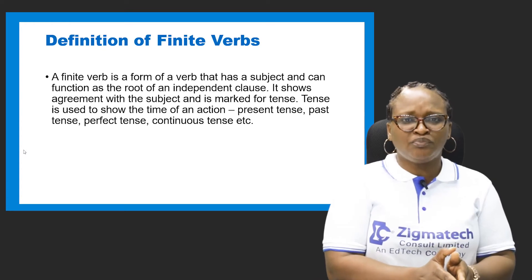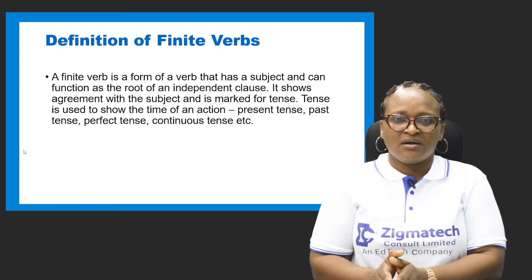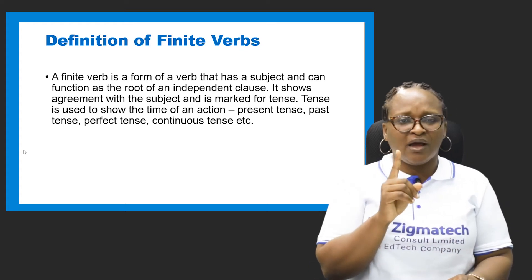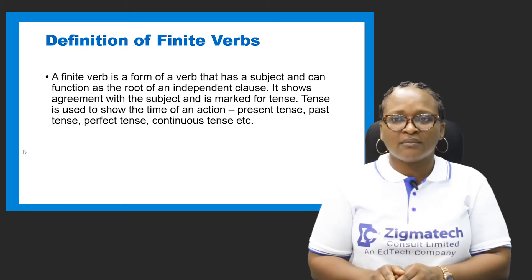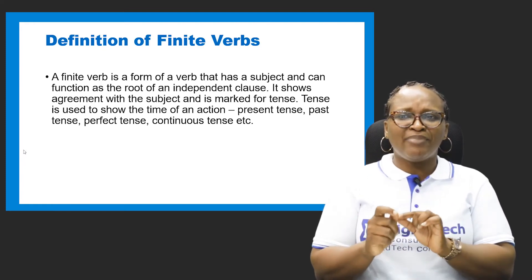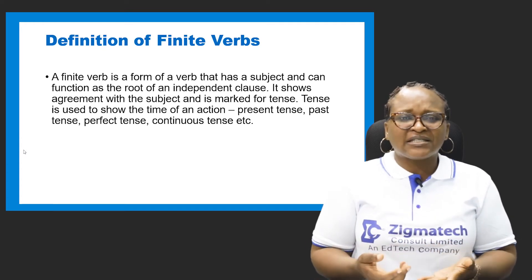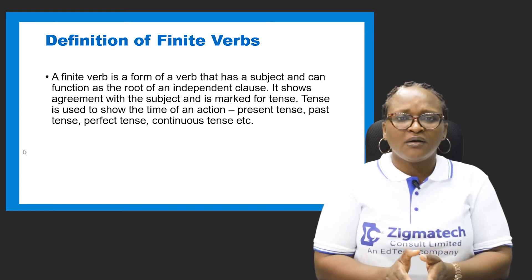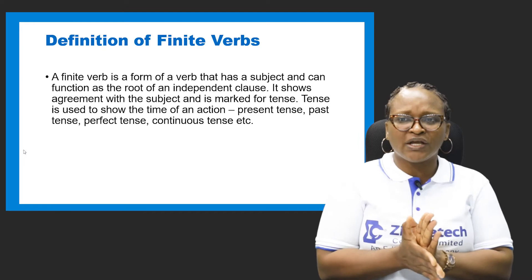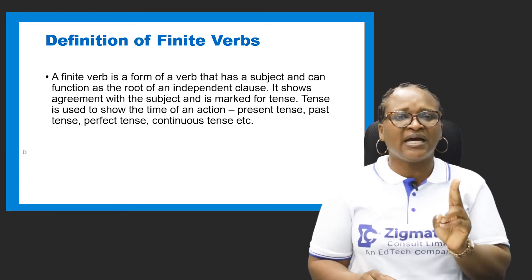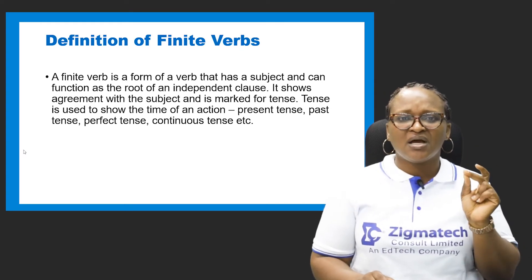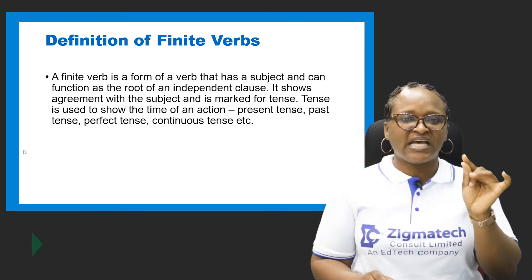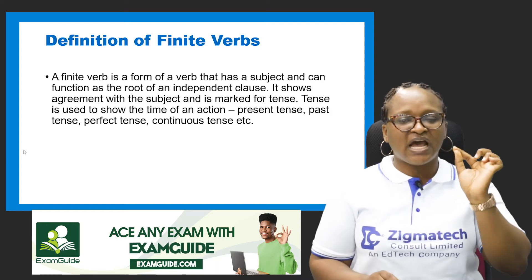A finite verb is a form of a verb that has a subject and can function as the root of an independent clause. It shows agreement with the subject and is marked for tense. In grammar there is what we call concord, which refers to subject-verb agreement. For example: 'Mr. Peter is handsome' — I can't say 'Mr. Peter are handsome' because Mr. Peter is singular and demands a singular verb. When we say marked for tense, that means the verb tells us if the act is in the present, past, future, or continuous tense.